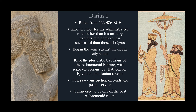Darius kept the pluralistic traditions of the Achaemenid Empire going, although there were some exceptions during the Babylonian, Egyptian, and Ionian revolts. Darius also oversaw the construction of roads and infrastructure, and even a postal service, so that he could better communicate with his satraps in other parts of the empire. Like Cyrus, he's also considered to be one of the best of the Achaemenid rulers, even if he did make some mistakes.